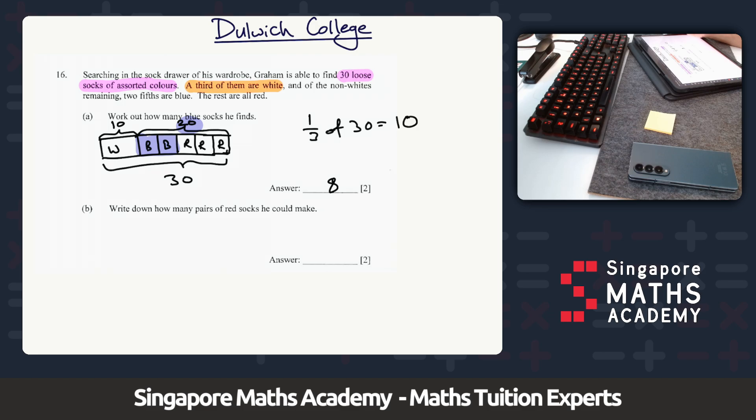Write down how many pairs of red socks he could make. Now if he's got 8 that are blue out of 20, that must mean that there are 12 red socks because 12 plus 8 is 20. And because there's how many pairs he can make, 12 divided by 2 is 6. He can make 6 pairs of red socks. Does that make sense? Not too challenging this question. Have a go at the remaining questions of the Dulwich paper and let me know if there were any challenging questions that you found, and we'll try to go through those in the future.